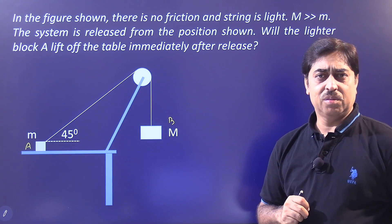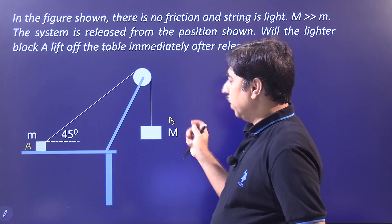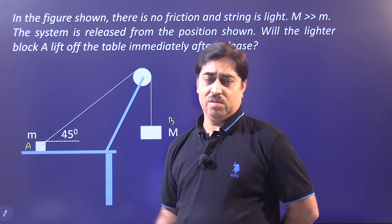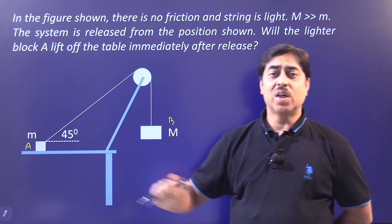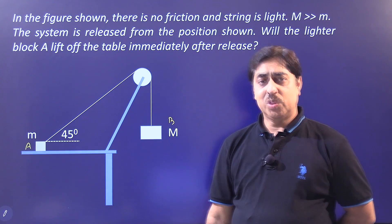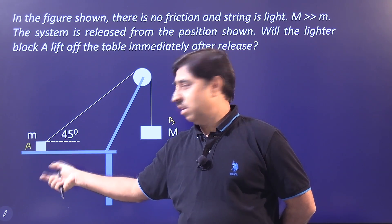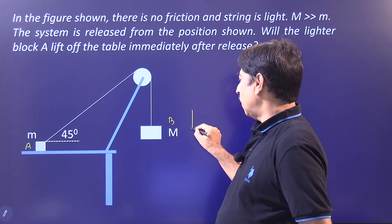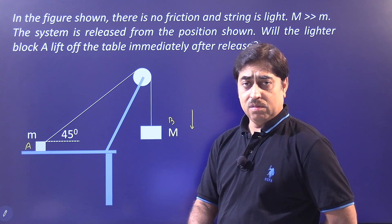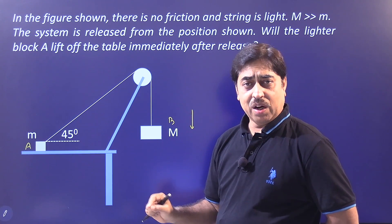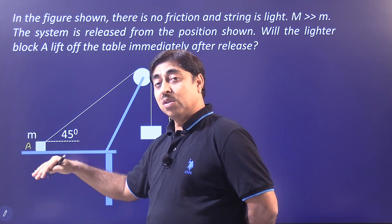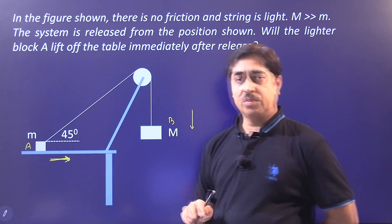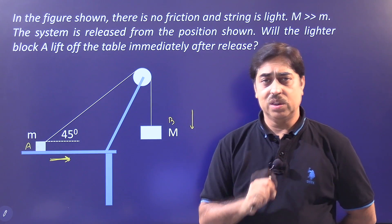For the sake of argument, we will assume that immediately after the system is released, this block stays on the table. We will assume that this block stays on the table, which means it will accelerate along the table in the horizontal direction only. If you release the system, this block is bound to go down — we are assuming, right or wrong we will decide later. But right now we are assuming that this block does not leave the table, so it is also moving in the horizontal direction, while the other one is going vertically downward.